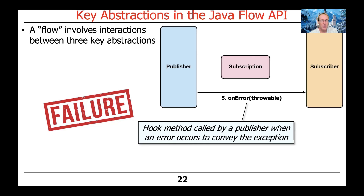The last type is the onError hook method, which can also only be called one time. It's used to indicate that something has gone wrong, passing an exception to describe whatever problem has occurred. Importantly, you can only have one call to onComplete or one call to onError, and they're mutually exclusive — you can't have onError followed by onComplete or vice versa. You either succeed or fail when you're done.